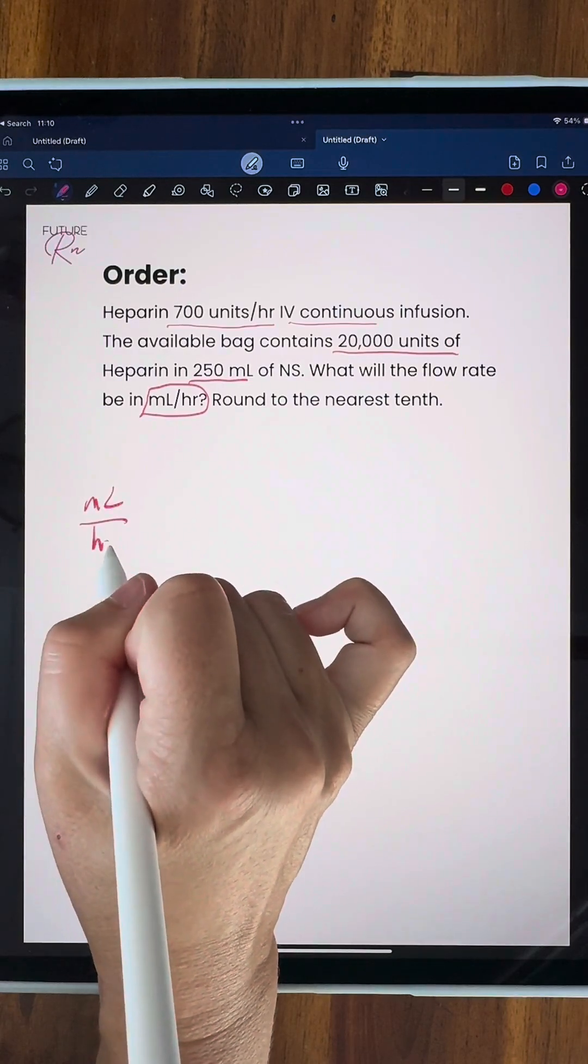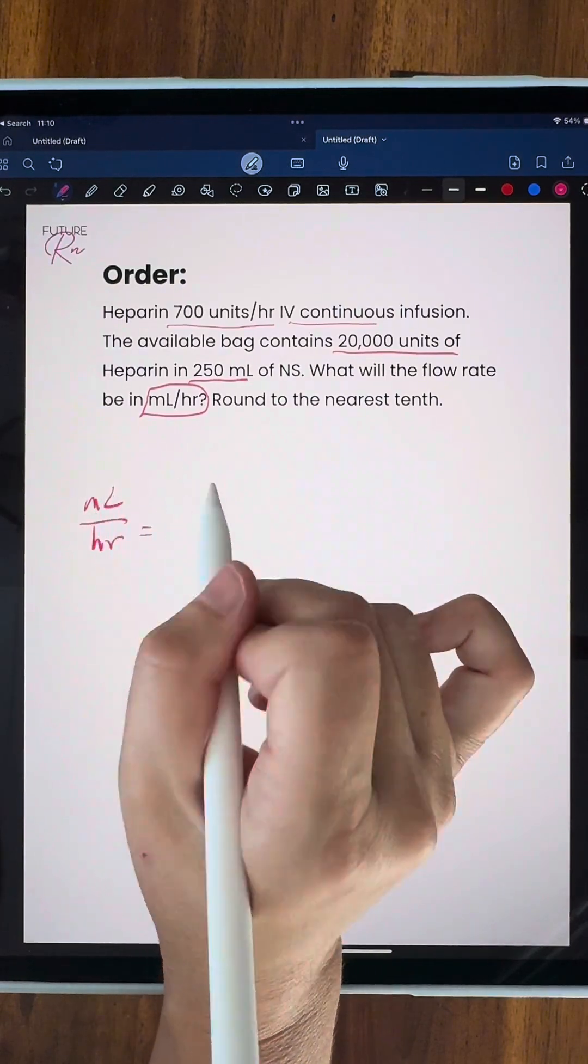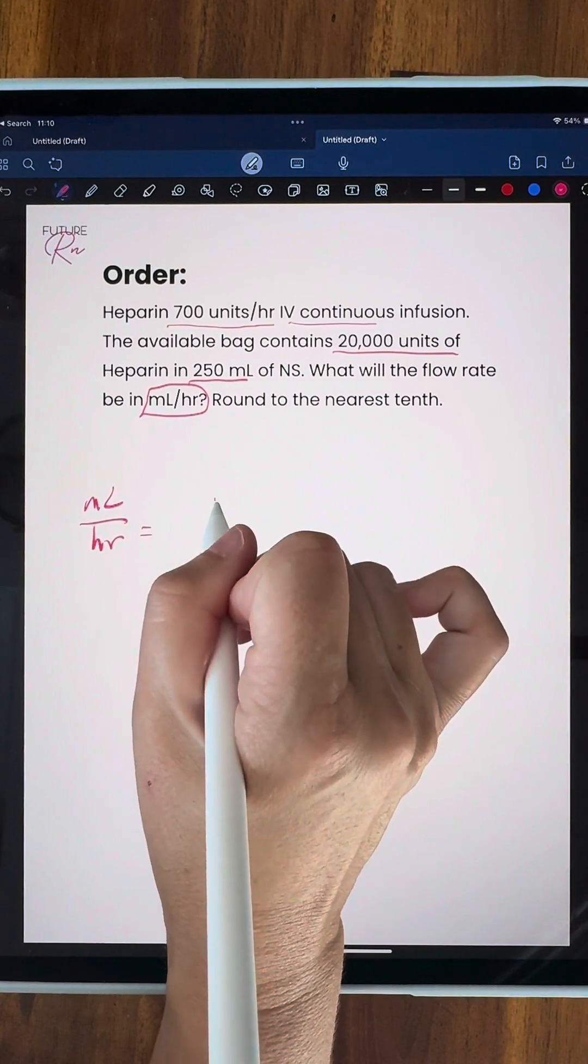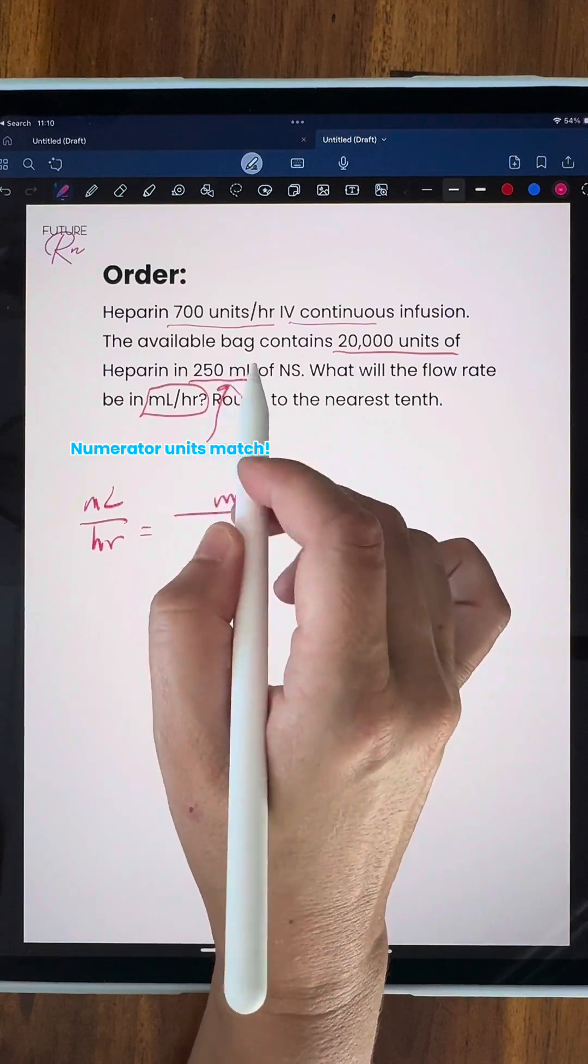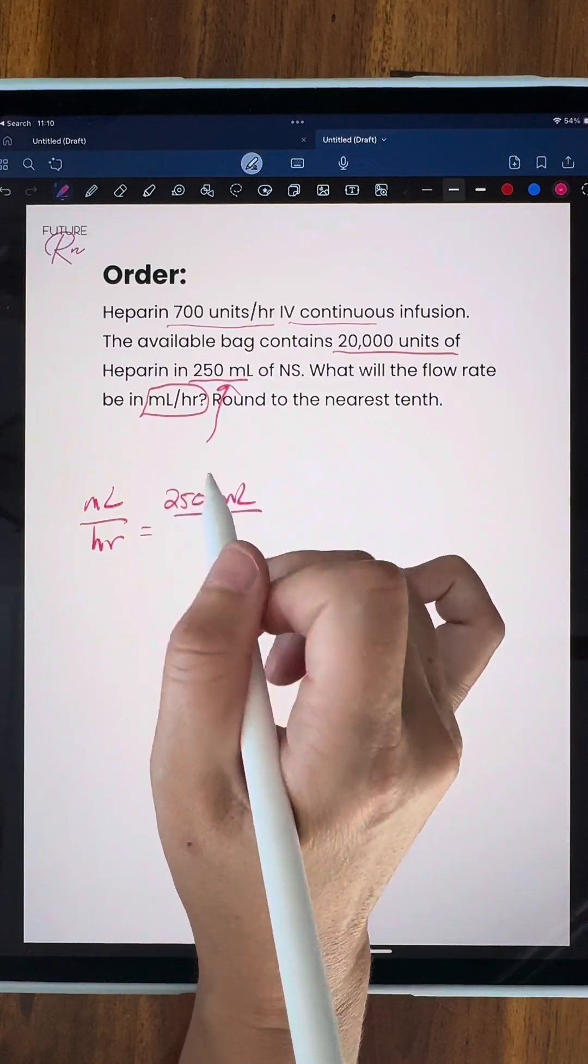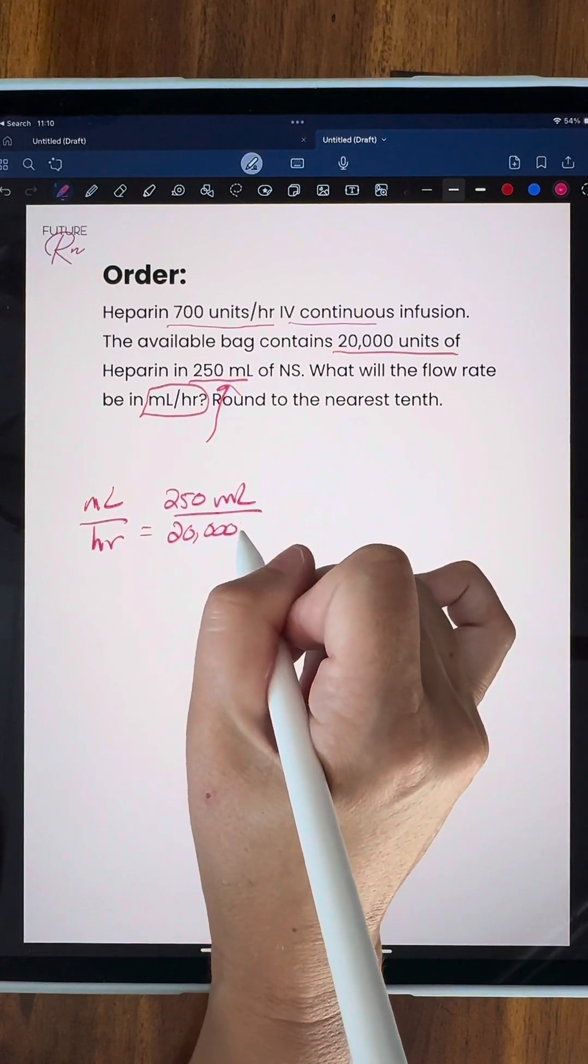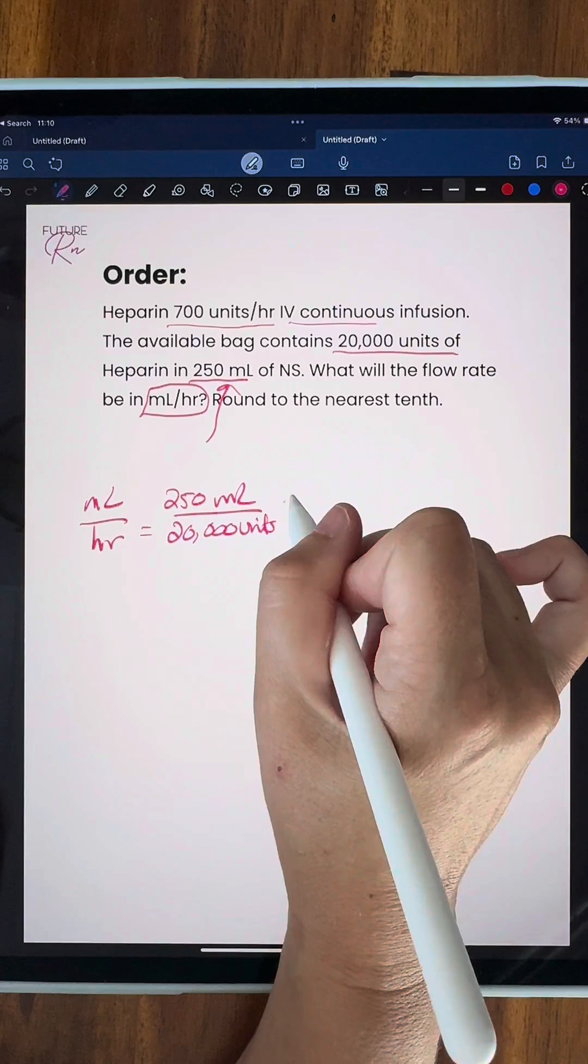So we're going to start off with our units to the left of the equal sign. And the first thing we want to put in here is something with our milliliters. So if we look back at our equation, we have our bag that is 250 milliliters, and then that bag has 20,000 units. So that's our first fraction.